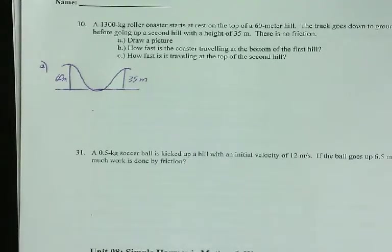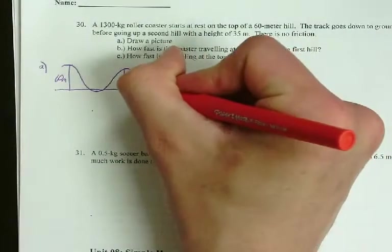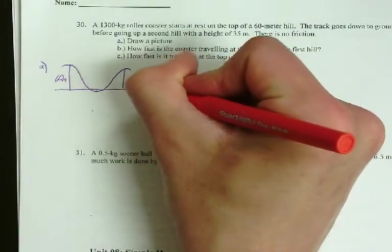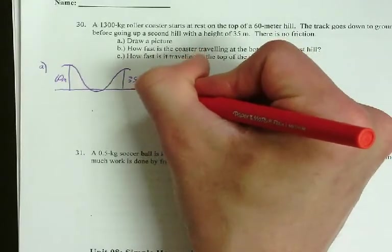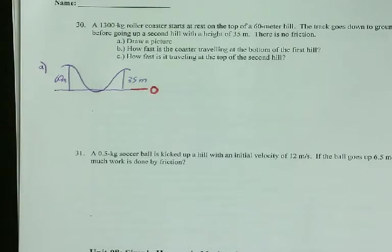Then we need to decide where our starting and ending points are for each part of the problem. But the next thing we need to do is figure out where zero is. I'm going to go ahead and make our zero point the ground, because I think that's going to be the simplest for most people. It's usually going to be the simplest to call the ground zero. You certainly don't have to. You can call any point you want zero.